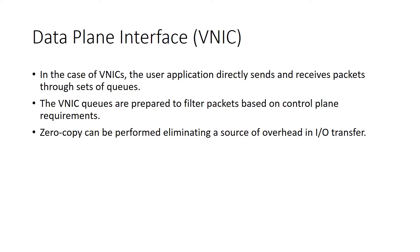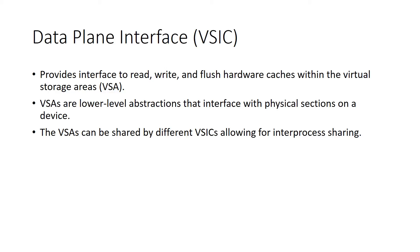For the VNICs, the network interface cards, one of its main roles is setting up queues. These queues can be used to filter packets out based on the requirements of the control plane. They're also set up to do zero copy — the network device can directly copy into the queue and make that data directly available to the application, and vice versa on a send — meaning you have a zero copy cost on IO transfer in the network, which can make it quite fast. For the storage device, it's roughly similar — it's an interface for rewriting and flushing hardware caches within the virtual storage areas. These virtual storage areas are abstractions at a lower level within the storage device, and they tag data to a given application while also allowing inter-process sharing.